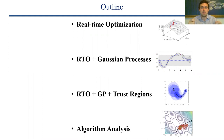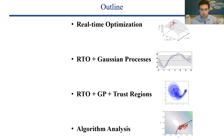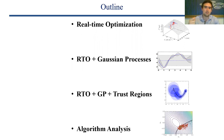Then I'll discuss how we use trust regions, which is a technique developed by the optimization community, on top of our Gaussian process and real-time optimization approach. And finally, I'll do a bit of analysis of our algorithm and explain some of the interesting facts.